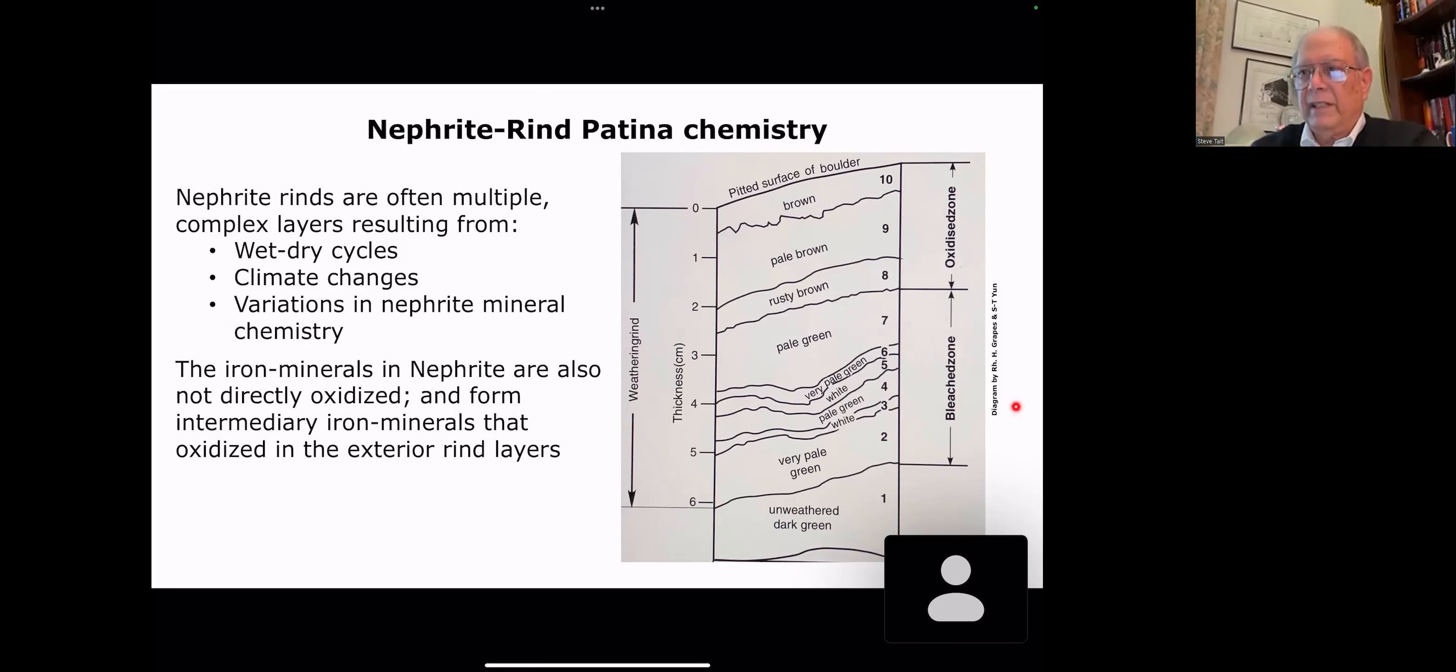You saw this example earlier. I've added the full figure here. The authors of this research refer to this as the bleach zone because you're still in the white to pale green color. And they refer to this as the oxidized zone because of the brown colors. In other words, what they're saying is the oxidation doesn't occur at the unweathered rock surface. It's occurring out here in the upper layers or the outer layers of the patina. They hypothesize and it makes a lot of sense that the layers are formed because of wet dry cycles, climate changes, and variations in nephrite mineral chemistry. And as I said, the oxidation is not occurring. The stone's not directly oxidizing. The oxidation occurs later on to give you the brown color.